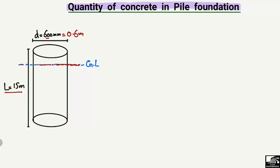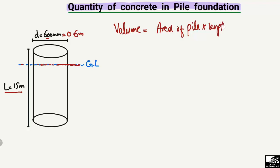So how do we find the quantity of concrete for this pile? To find the quantity of concrete we have to find the volume of concrete. The volume of concrete in a pile is equal to the area of the pile multiplied by the length of the pile. This formula is used to find the volume of concrete for any structural member.